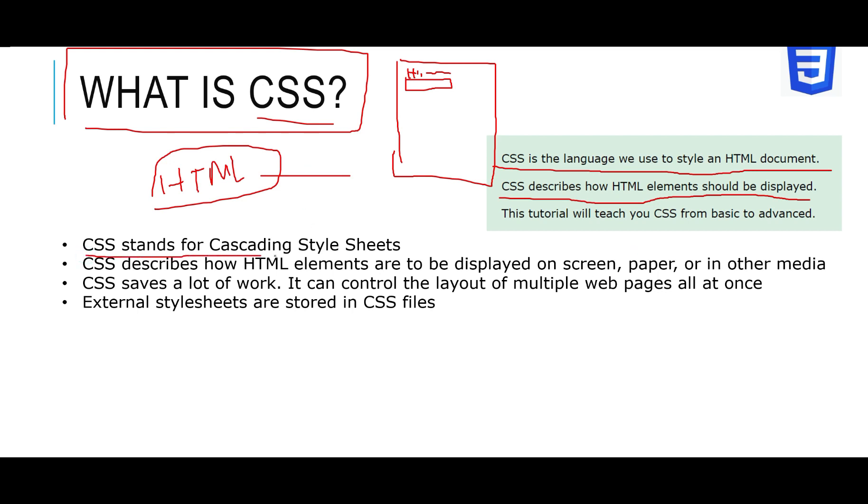CSS stands for Cascading Style Sheets. CSS describes how HTML elements are to be displayed on screen, paper, or in other media. CSS saves a lot of work - it can control the layout of multiple web pages all at once. External stylesheets are stored in CSS files. The style and look of a document is controlled by CSS, and that information you can store either in the same HTML document or in separate files called CSS files.